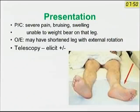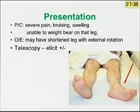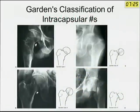Since this is a PG forum, I have focused mainly on the postgraduate perspective. The presentation would be pain, joint line tenderness, and inability to weight bear after a trivial fall. The patient may show a shortened leg with external rotation, and telescopy, if elicitable, is a pathognomonic clinical finding.